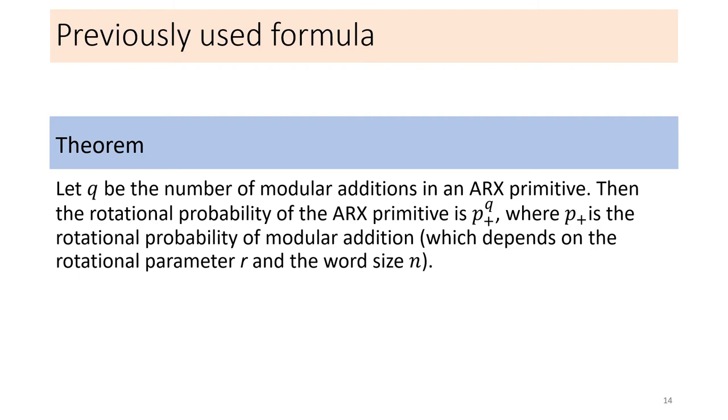First, it was considered that the probability depends only on the number of additions and not on their positions. Additions were considered to form a Markov chain, meaning that the output of the ith addition does not depend on the previous additions. This proves to be false since the first bit is biased to 1. Hence, the total rotational probability was calculated by multiplying the probabilities of all modular additions. For q additions, the rotational probability would be p to the power q, where p is the probability of a single modular addition.